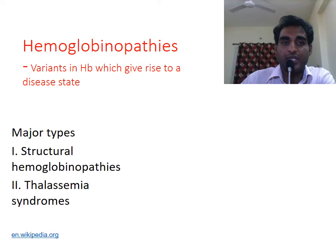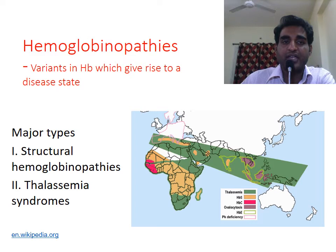Hemoglobinopathies refer to variants of hemoglobin which give rise to a disease state. The major types are structural hemoglobinopathies and thalassemia syndromes. Hemoglobinopathies are prevalent in Africa and Southeast Asia, and the commonest are sickle cell disease and thalassemia. We will cover sickle cell disease in this session and thalassemia in the next one.